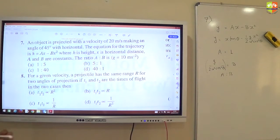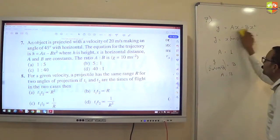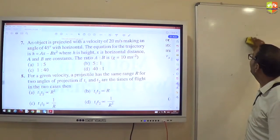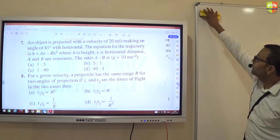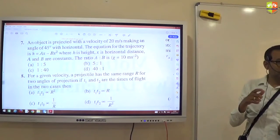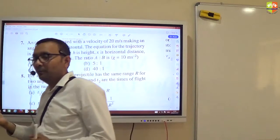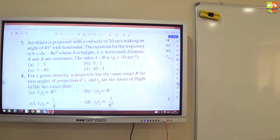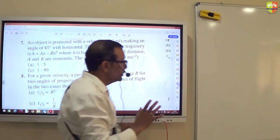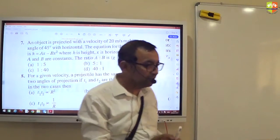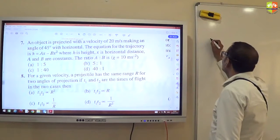Eighth one. For what two angles will the range be the same? We have done this as theory. The range of two projectiles will be same when sum of the angles is 90 degrees. So if one angle is θ1, other angle will be 90 minus θ1.